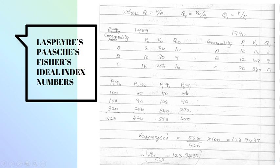Now for the Paasche's method we need P1Q1 and P0Q1. So P1Q1, 10 into 11, 110. 12 into 9, 108. 20 into 17, 340. The summation of P1Q1 is 558.